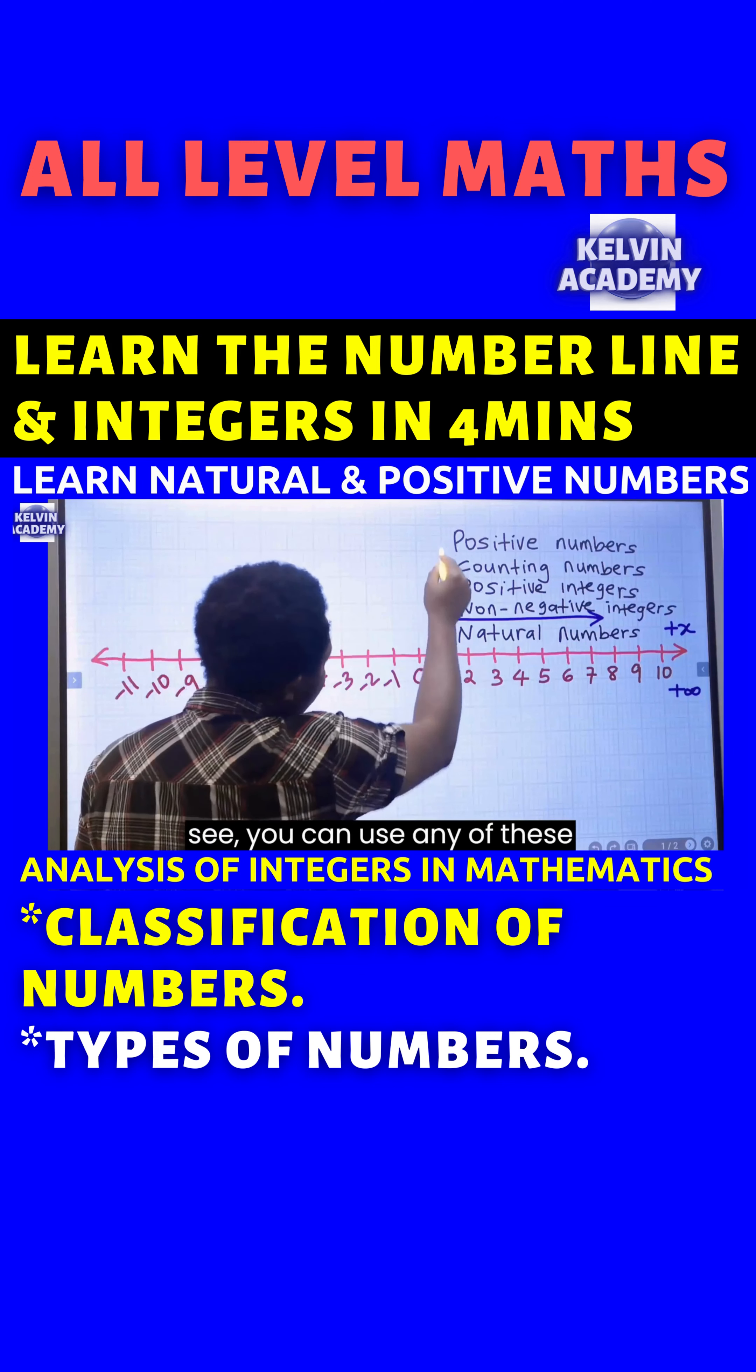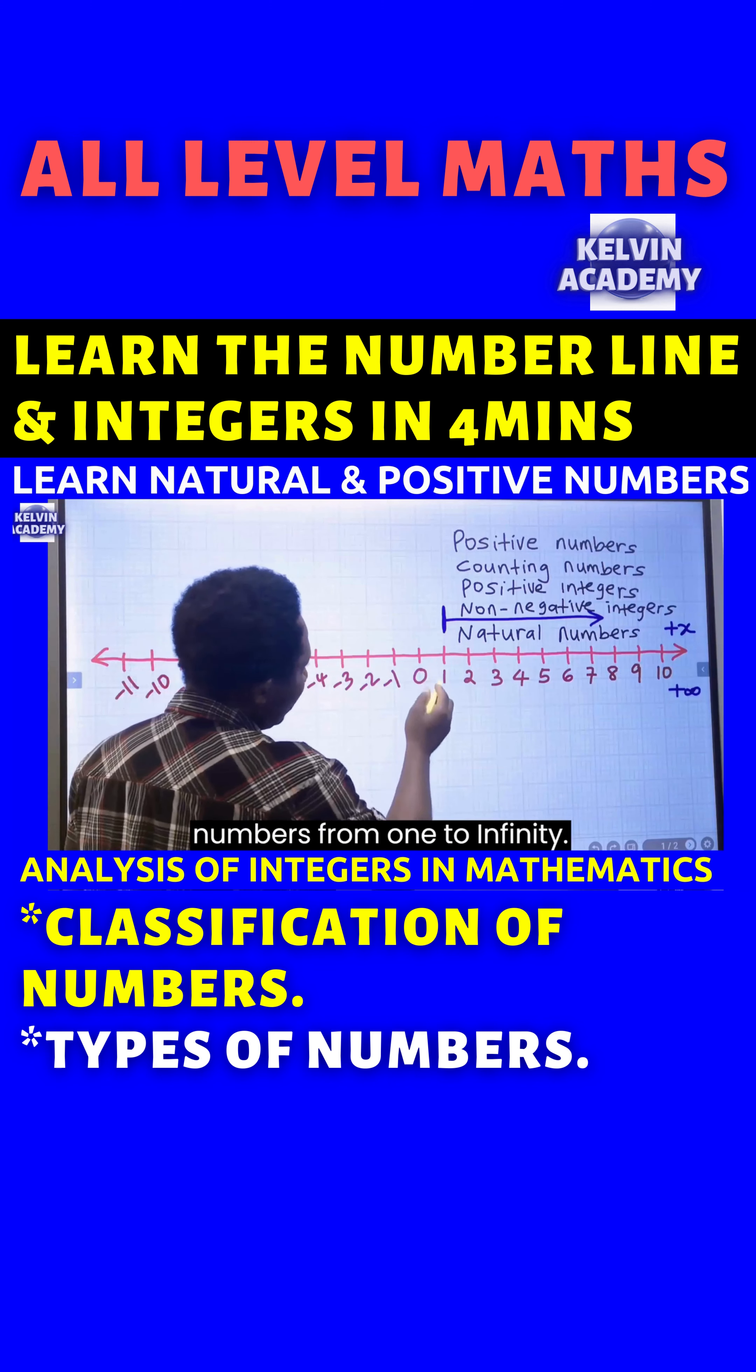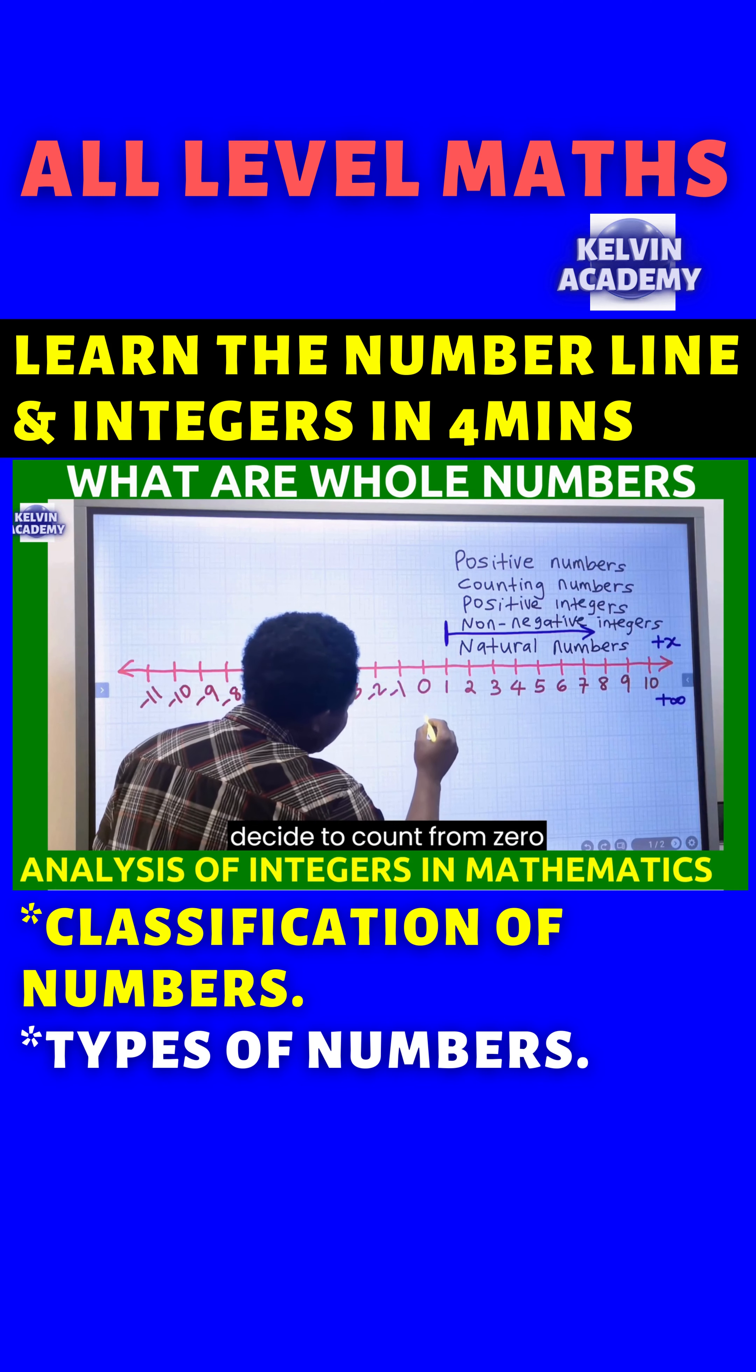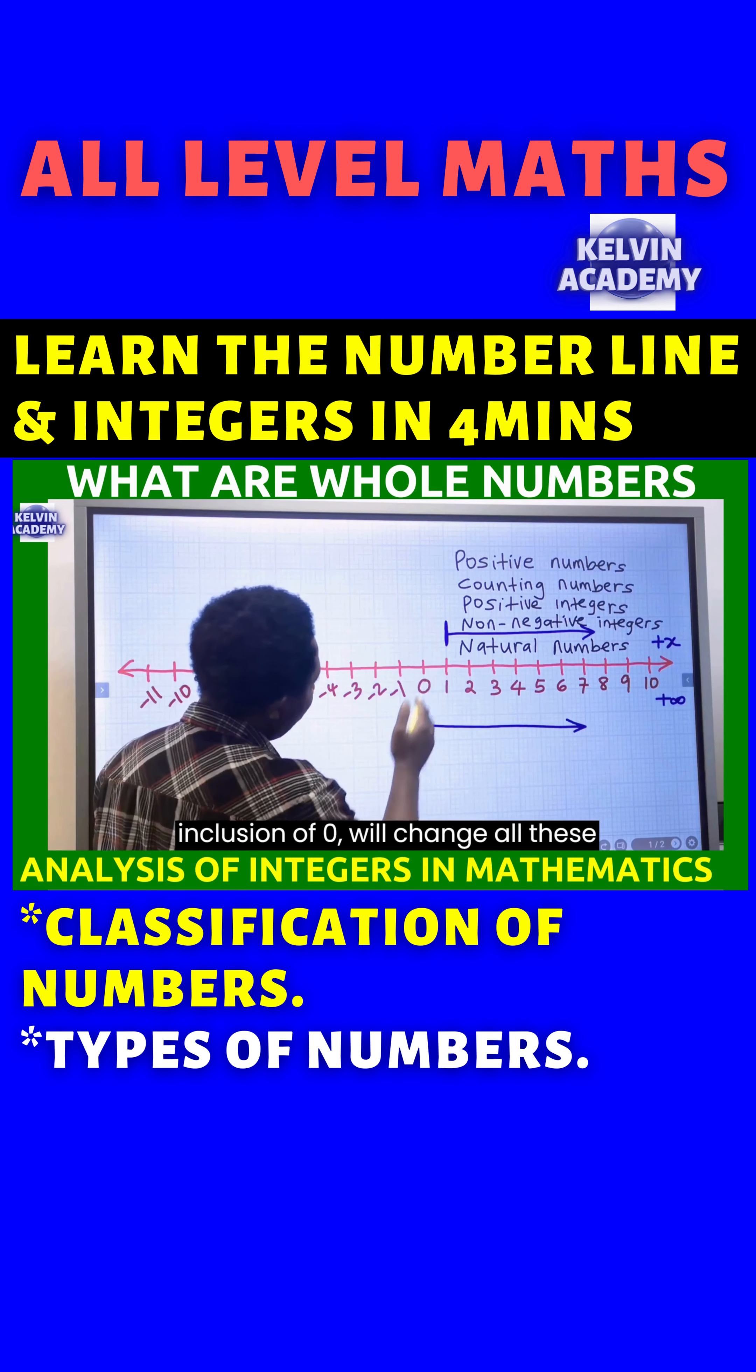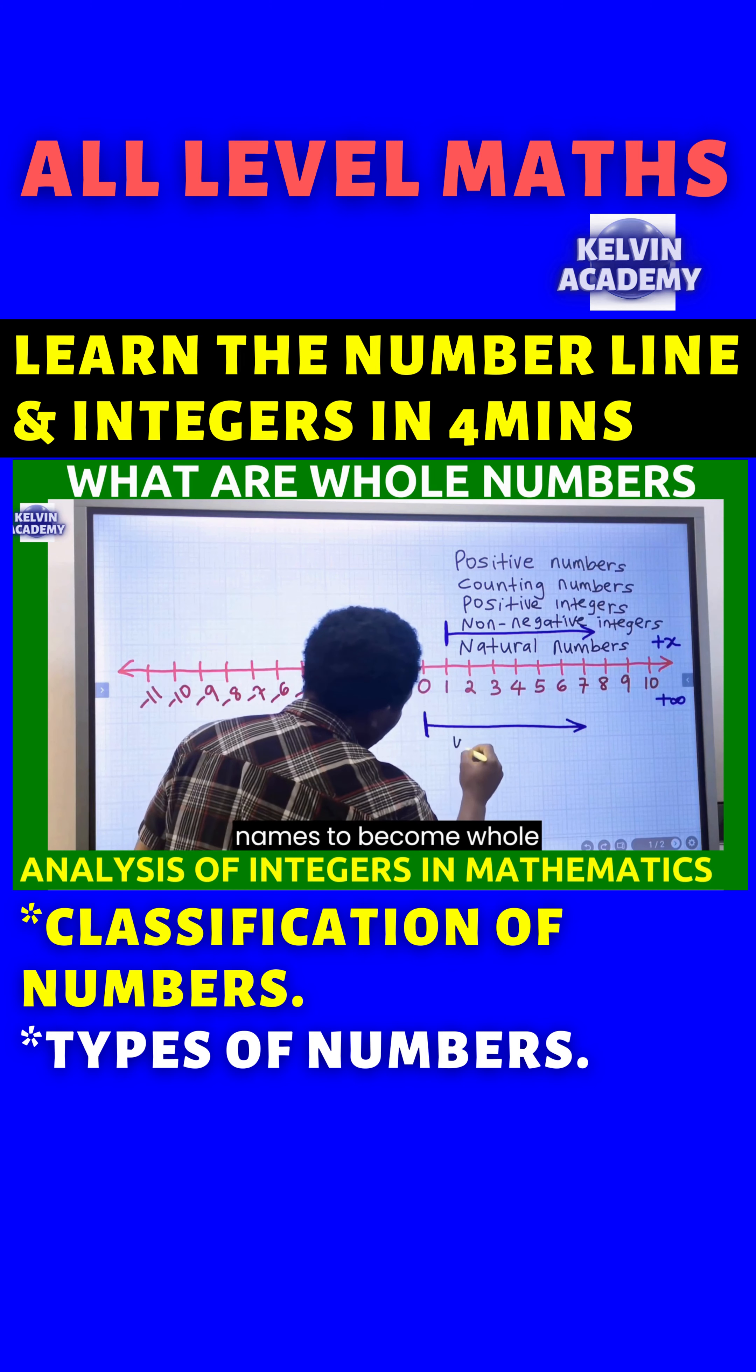You can use any of these names to represent all the numbers from 1 to infinity. Instead of counting from 1, if we decide to count from 0 towards this direction, just the inclusion of 0, we change all these names to become whole numbers.